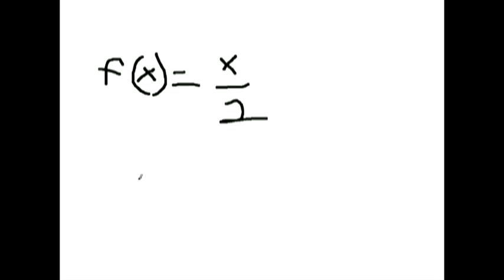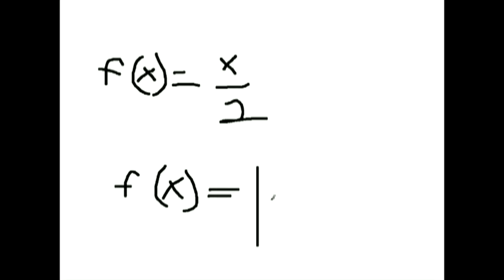Now, let's take a look at the function f(x) equals the absolute value of x. In this case, this function is not injective because for inputs such as negative 1 and 1, the output is 1, or negative 2 and 2, the output is 2. Since an output can have multiple inputs, the function is not an injection.